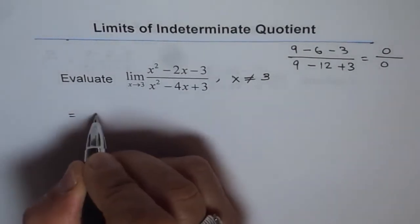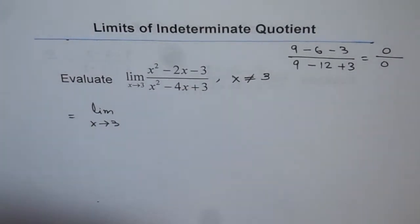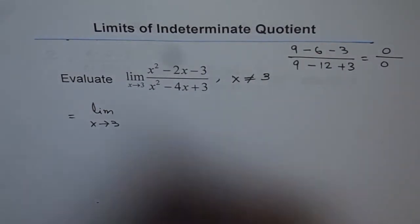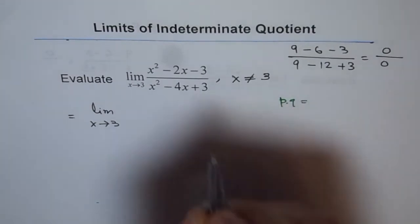So we can write this expression as limit x approaches 3. Now to factor the numerator, what we can do is, we will do product and sum. So, the product should be p times q, let's say two numbers,